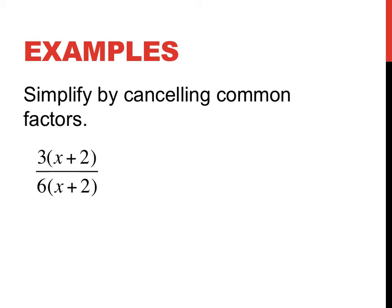If I get something that's actually factorised on the top of my fraction and the bottom, I can still simplify. So in the brackets, I have x plus 2 on the top and on the bottom, so I can cancel that out. Now I'm just left with the common factors of 3 and 6. The highest number that goes into 3 and 6 is 3 — it goes into itself once and into 6 twice. So the answer is 1 over 2. You can see that having things factorised makes it quite easy to simplify fractions.